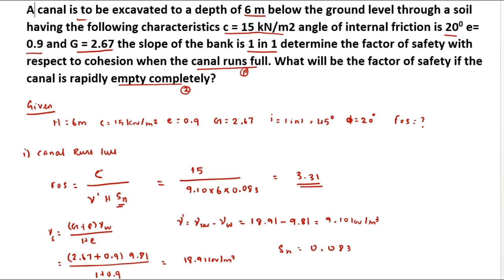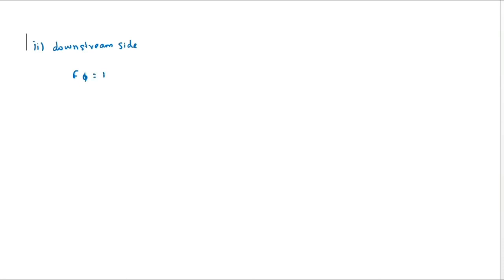For the second question — the downstream side where the canal is rapidly emptied completely — we use the condition that f_φ equals 1, meaning mobilized friction equals φ. The formula becomes: FOS = c / (γ_sat × h × Sn). We also need to find the mobilized friction angle φ_m.